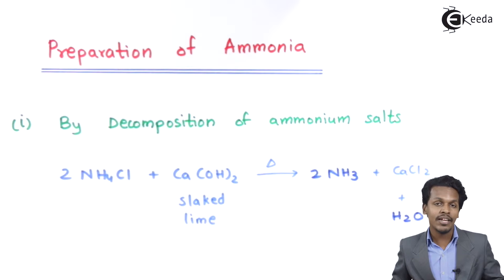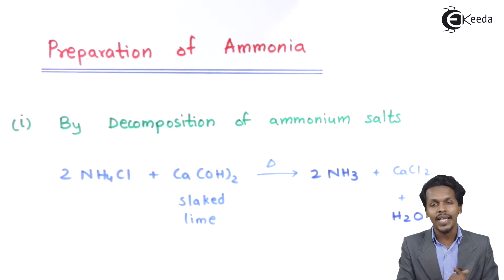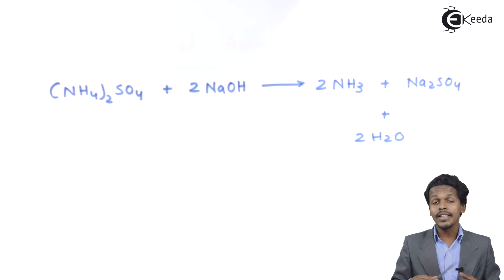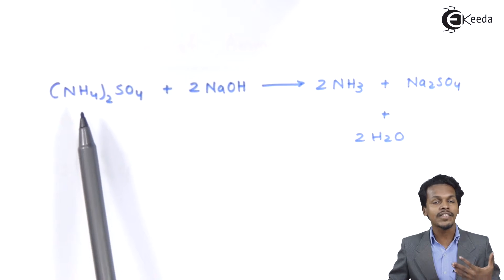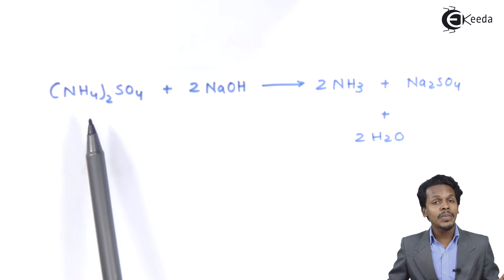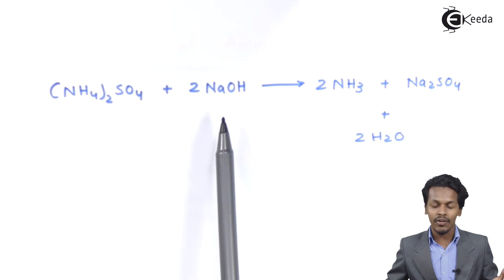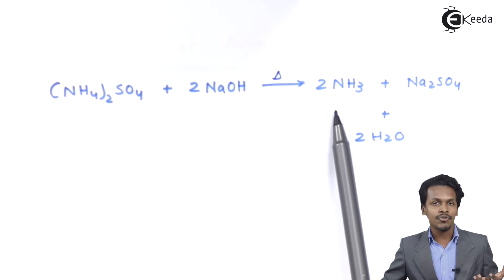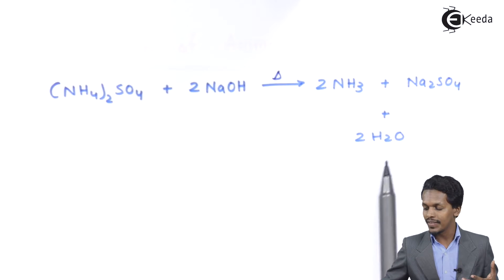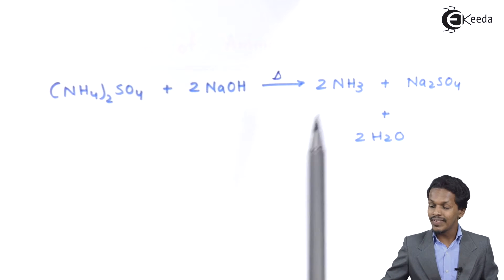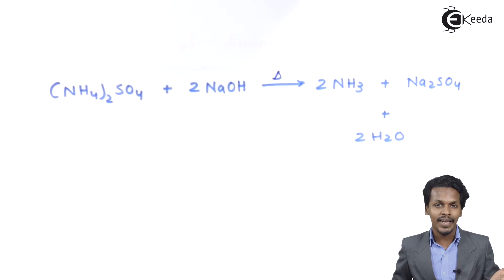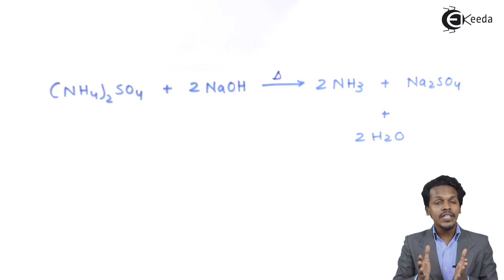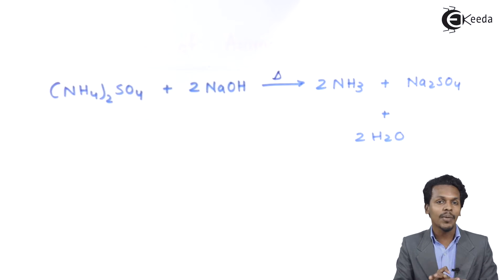Another reaction from which we can prepare NH3 is also from an ammonium salt — here we have considered ammonium sulfate. Whenever ammonium sulfate is reacted with sodium hydroxide at a particular temperature, this gives us 2 moles of ammonia along with Na2SO4 and water as a byproduct. This is another method to obtain ammonia. This completes the first method: decomposition of ammonium salts.